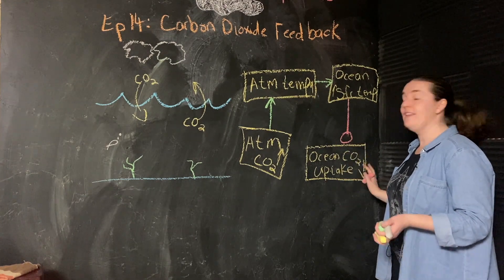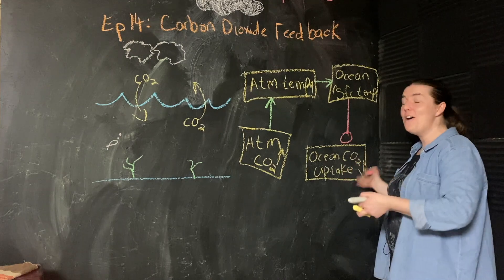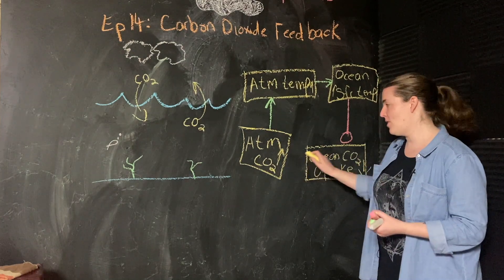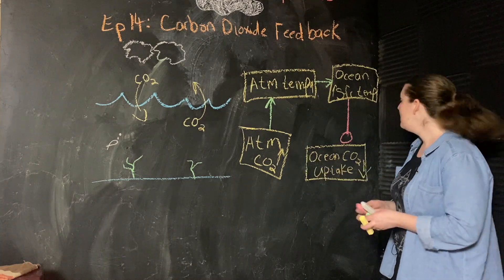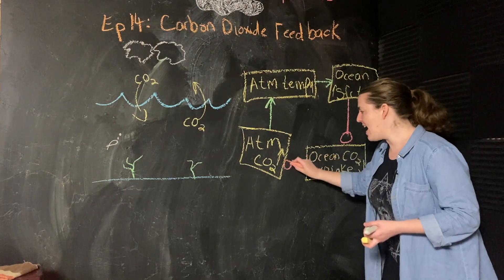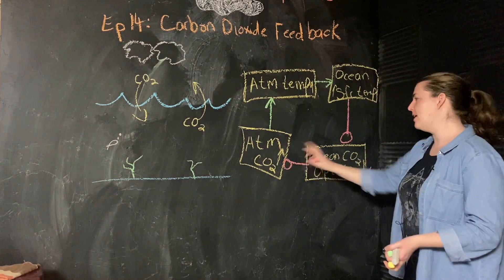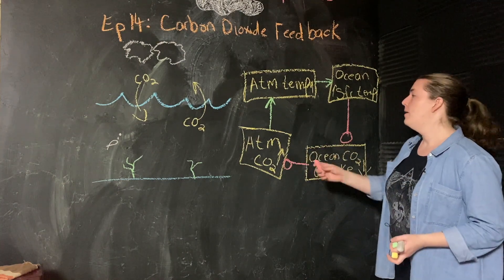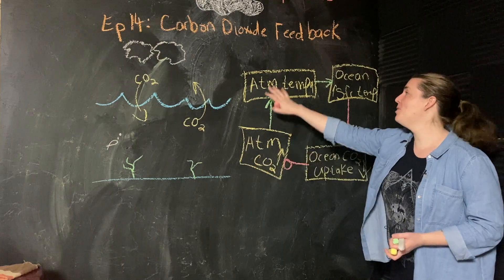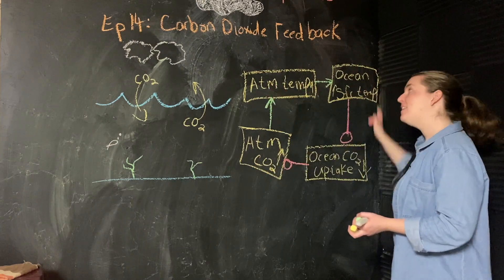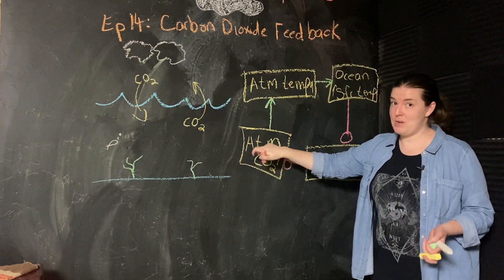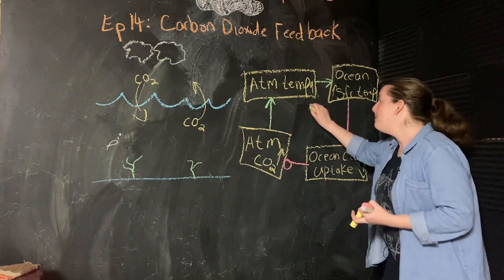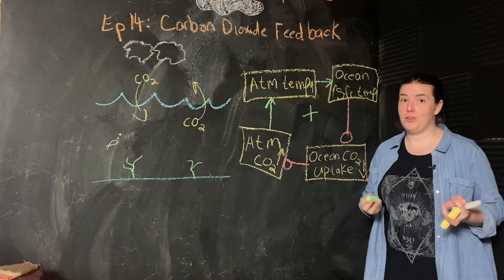And the less CO2 that's in the ocean, the more there's going to be in the atmosphere. So that would make this guy go up. Another negative connection because these arrows are different. And so overall, more atmospheric carbon, warmer temperatures leads to even more atmospheric carbon dioxide and even warmer temperatures. So this is another positive feedback loop.